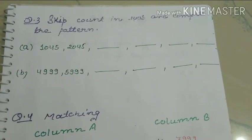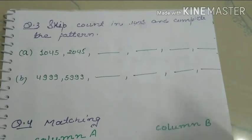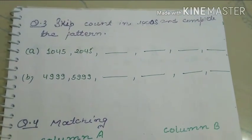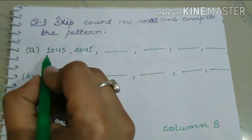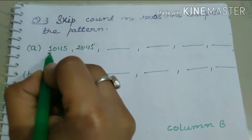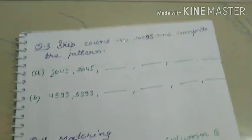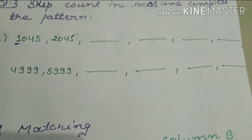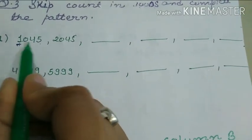Question 3: skip count in thousands and complete the pattern. Here we skip the number at the 1000th place, and the rest of the digits remain the same.